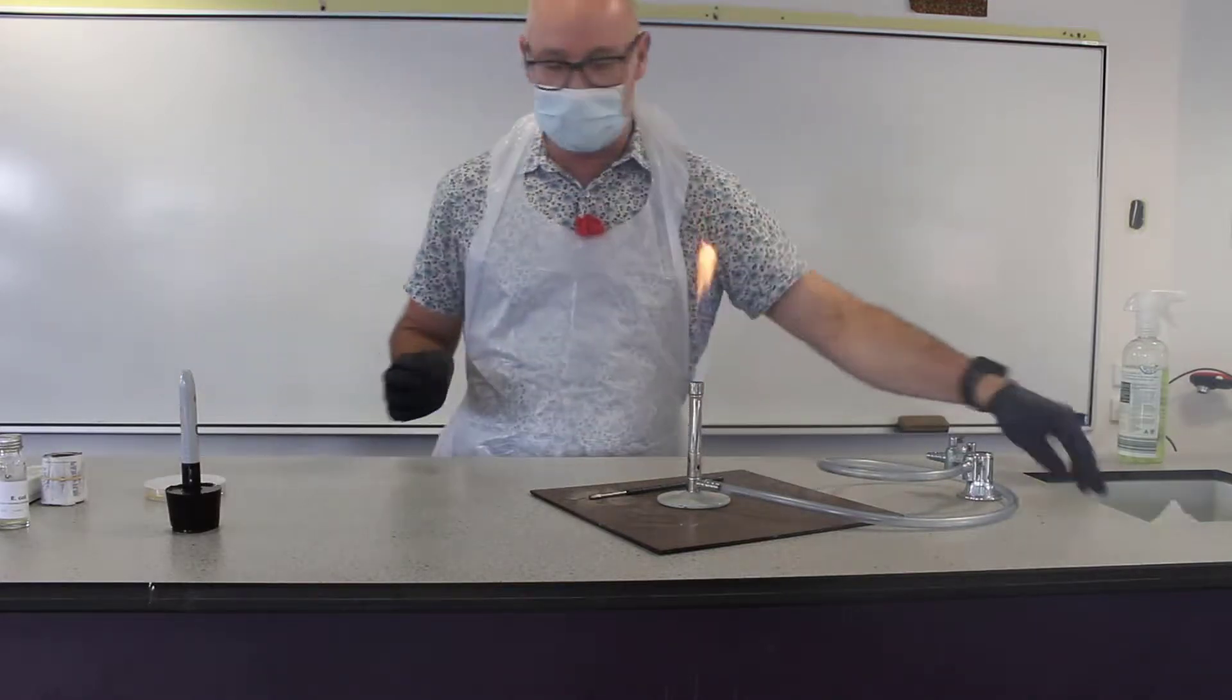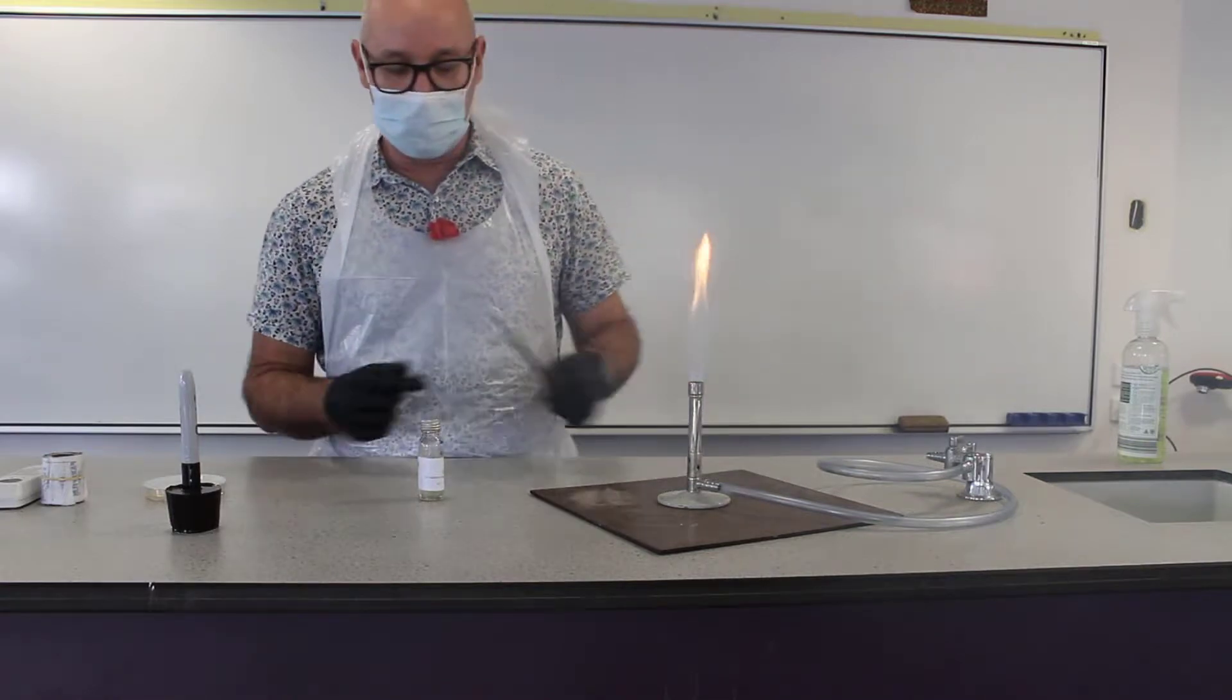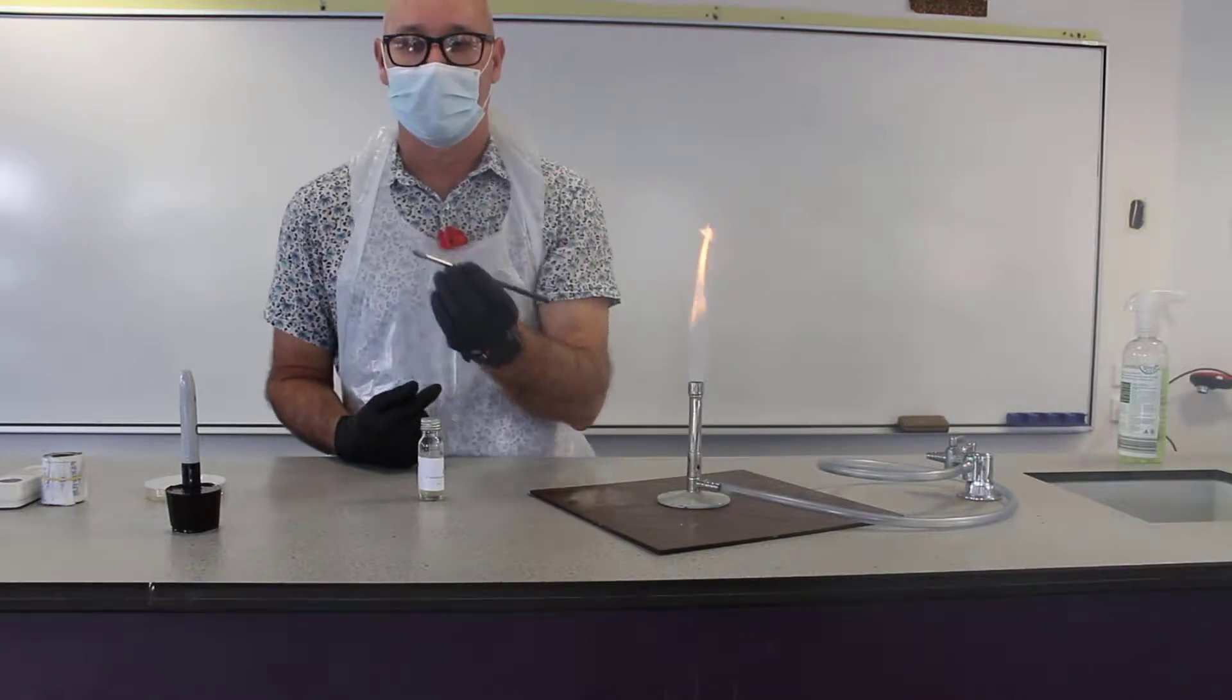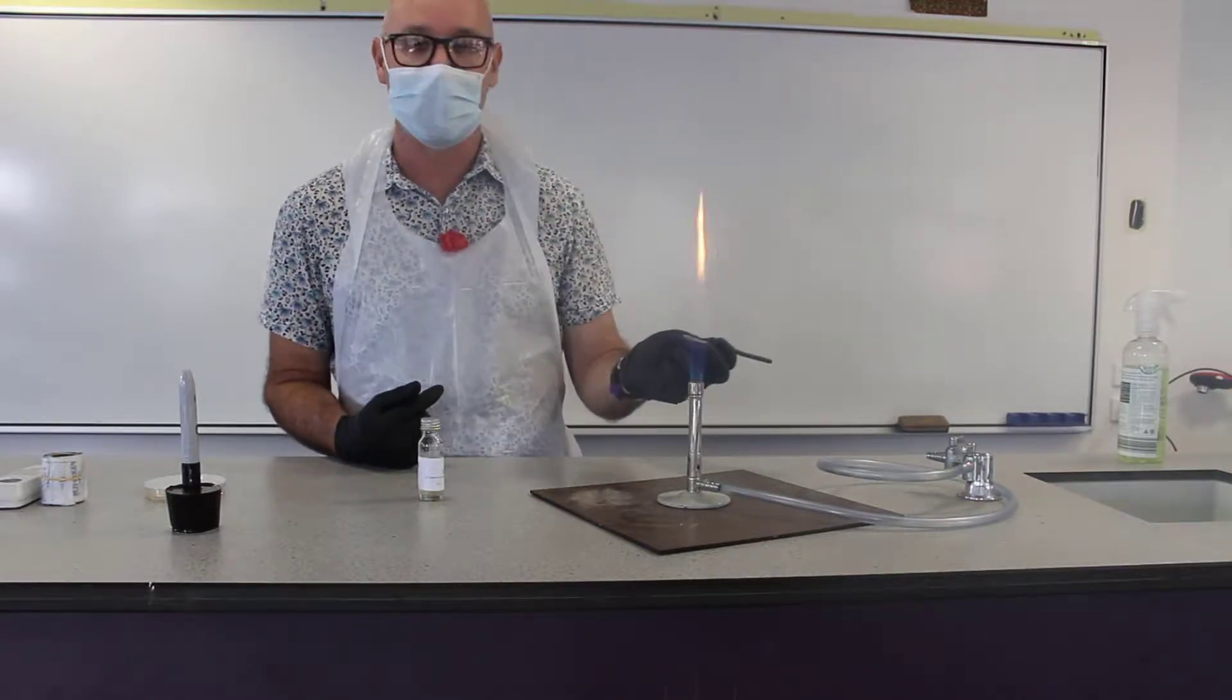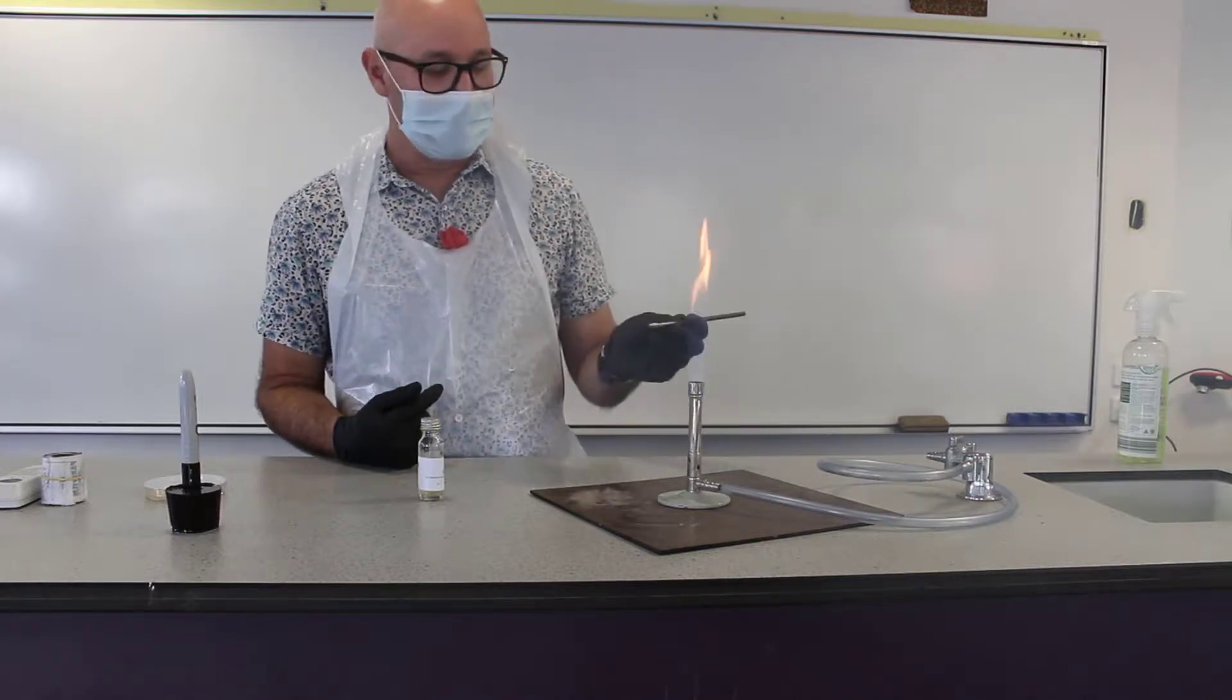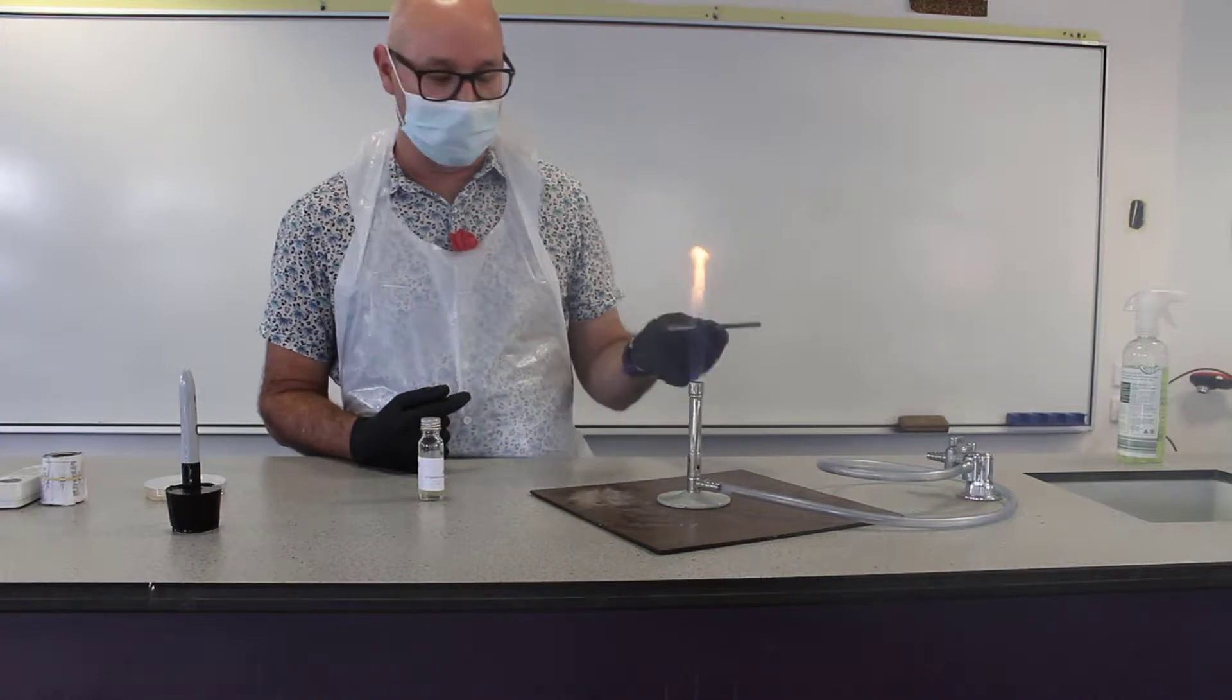Now, so now we're about ready for our technique. We're going to inoculate our plate with a metal loop. The metal loop we can flame in the Bunsen burner flame. This is going to kill any bacteria that are on the loop.